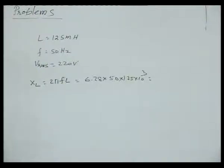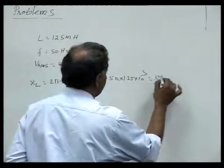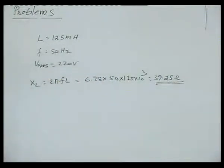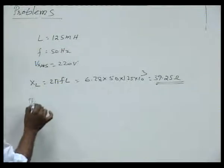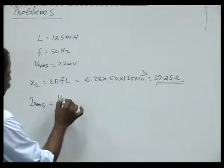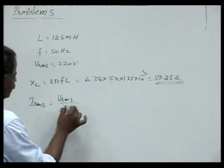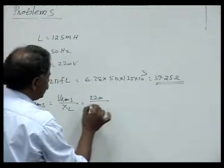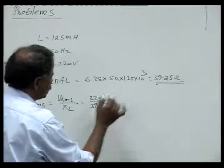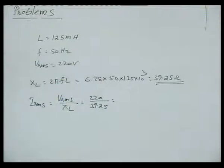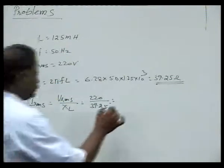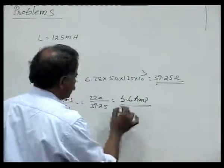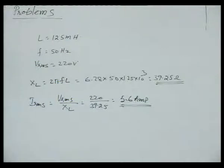If we calculate, this comes out to be 39.25 ohms — this is the value of the inductive reactance. Now I need to calculate the value of RMS current, that is nothing but RMS voltage divided by the reactance of the inductor. RMS voltage is 220 volts divided by 39.25 ohms, which comes out to be 5.6 amperes. 5.6 amperes is the RMS value of the current.